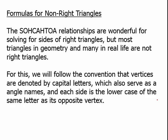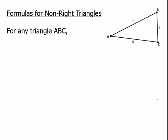For this, we'll follow the conventions that vertices are denoted by capital letters, which also serve as the angle names. And each side is the lower case of the same letter as its opposite vertex. For example, here we see we have the three vertices: A, B, and C, and opposite from the angle is the side indicated by the lower case letter of the same letter.